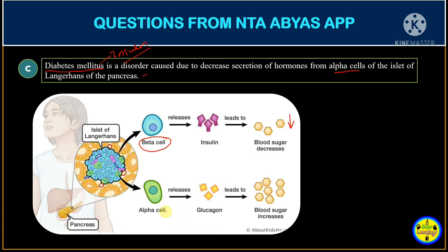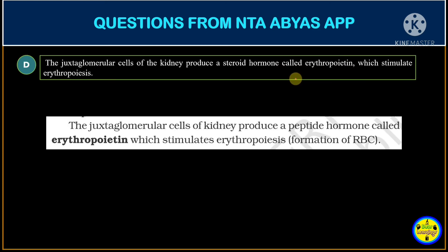Beta cells produce insulin, which is responsible for decreasing blood glucose. Alpha cells produce glucagon, which increases blood glucose. Diabetes mellitus is a disorder related to insulin secretion, not alpha cells. So this statement is not correct.